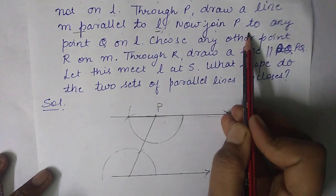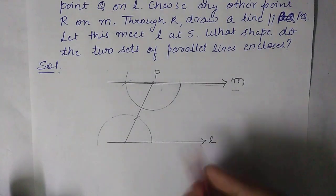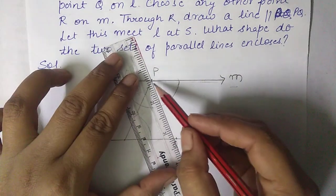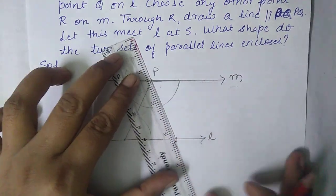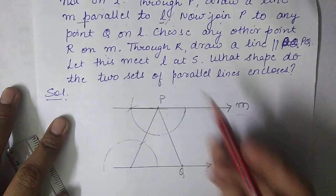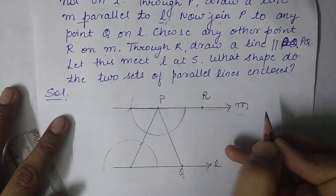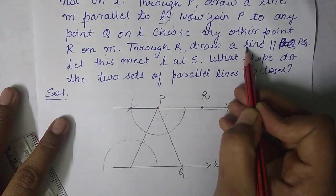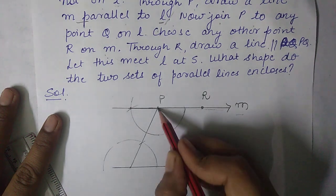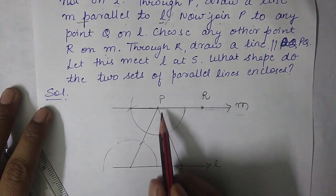After that, join P to any point Q on L. Take that point Q, and join P to Q. Then choose any other point R on M. Through R we have to draw a line which is parallel to PQ.